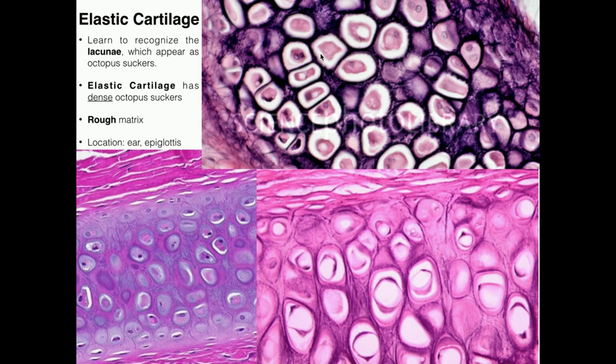You do need to be able to recognize those. In many cases, particularly in elastic and hyaline cartilage, they kind of look like a bunch of octopus suckers. If you look at a real octopus's arms, it actually has a ton of suckers on it, and they kind of look like that. So if you recognize those lacunae, that tells you it's cartilage.